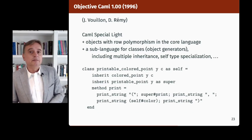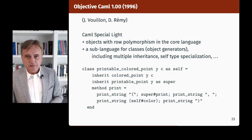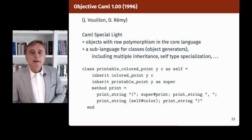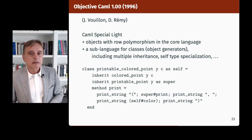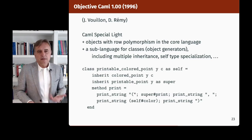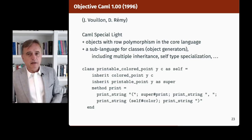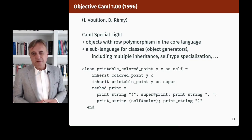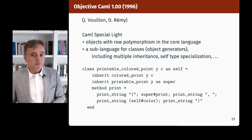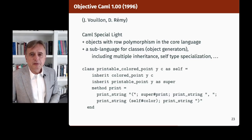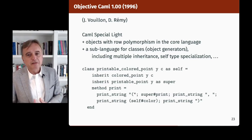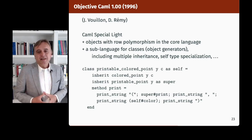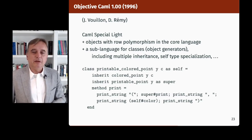That was the basis for Objective Caml 1.00, designed by Vouillon and Rémy and implemented by Vouillon, taking Caml Special Light and adding objects with row polymorphism in the core language, plus a sub-language for classes — classes being viewed as object generators — supporting multiple inheritance, self-type specialization, binary methods, and pretty much everything fitting quite naturally. At the bottom of the slide you can see how you can define printable color points by inheriting from colored points and printable points, with self-references and super-references.